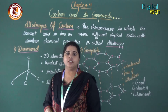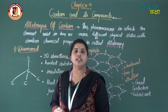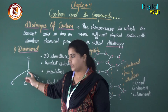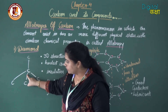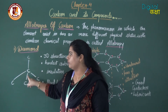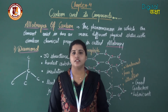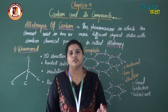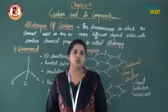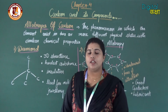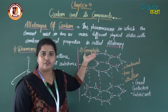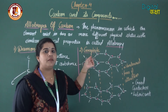Why does diamond act as an insulator? Carbon has atomic number six with electronic configuration 2, 4 — so carbon has four electrons in its last shell. All four electrons are involved in bonding with four other carbons, so no electron is free. We know that electricity can only flow due to the presence of free charges. Since there is no free charge in diamond, it does not conduct electricity.